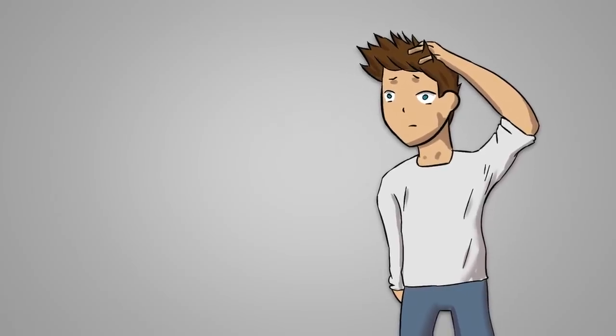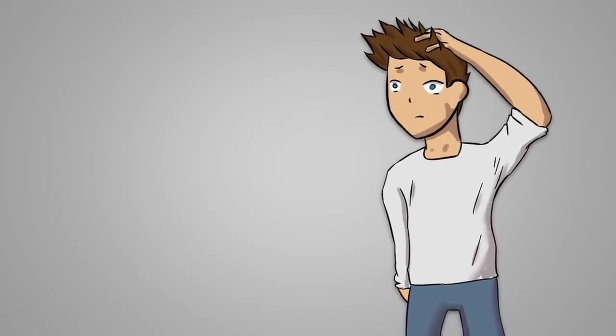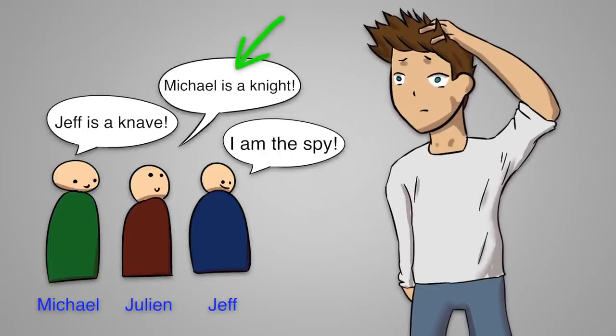The king trusts in your logical abilities in the hope of finally catching the spy. You know that Julian is not the knight, since if he were, then Michael would also have to be the knight, which doesn't work.